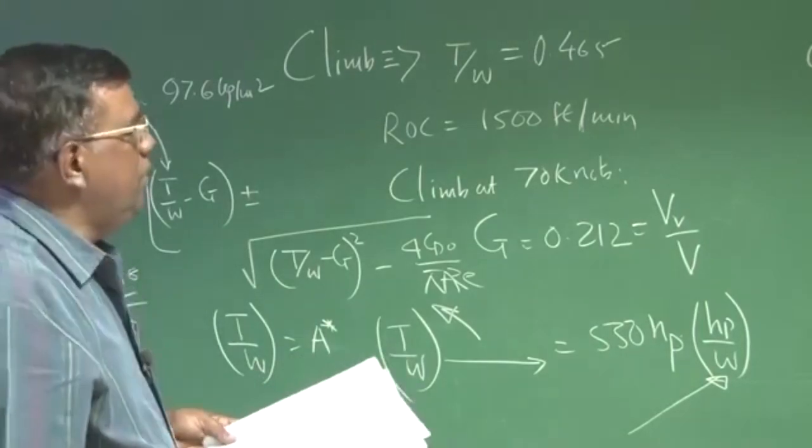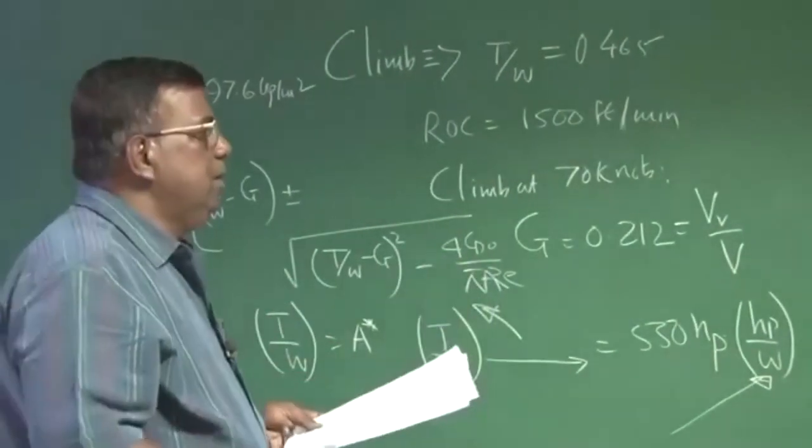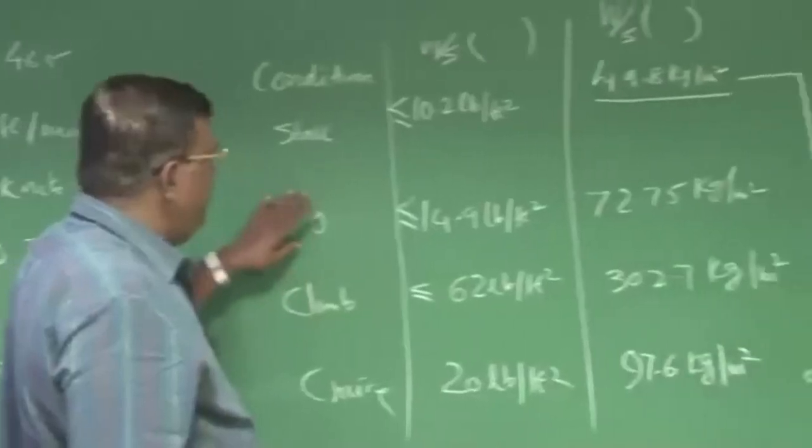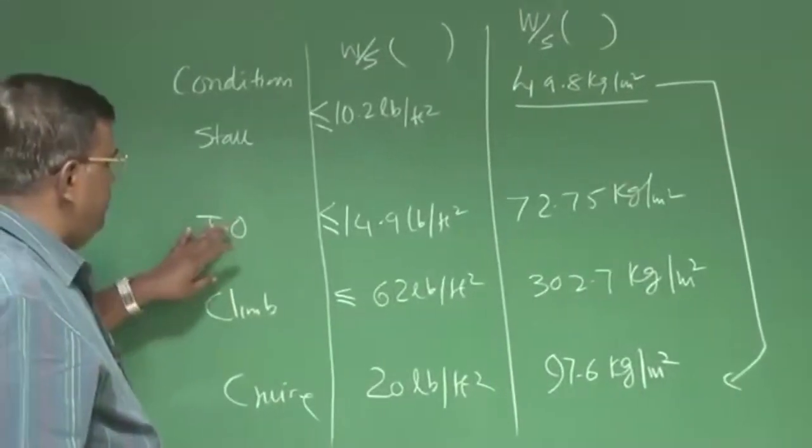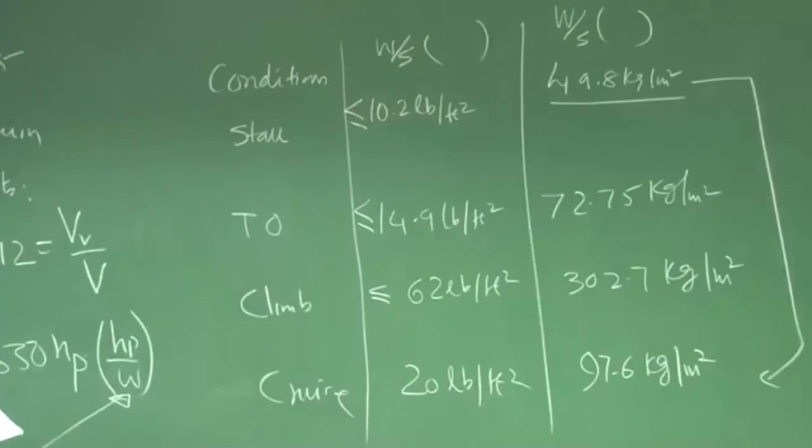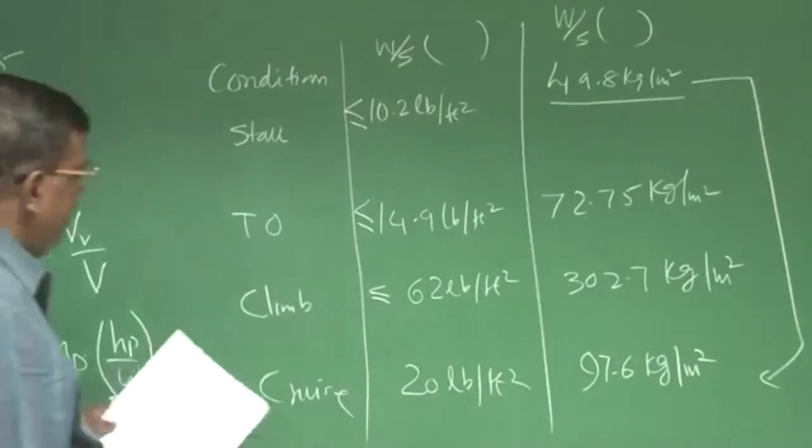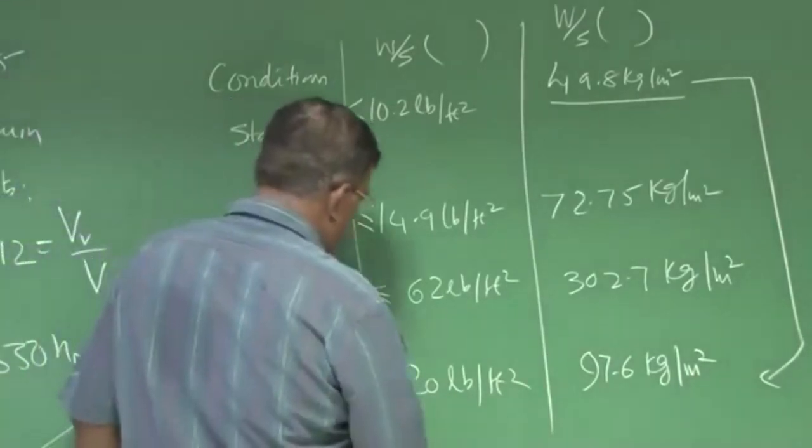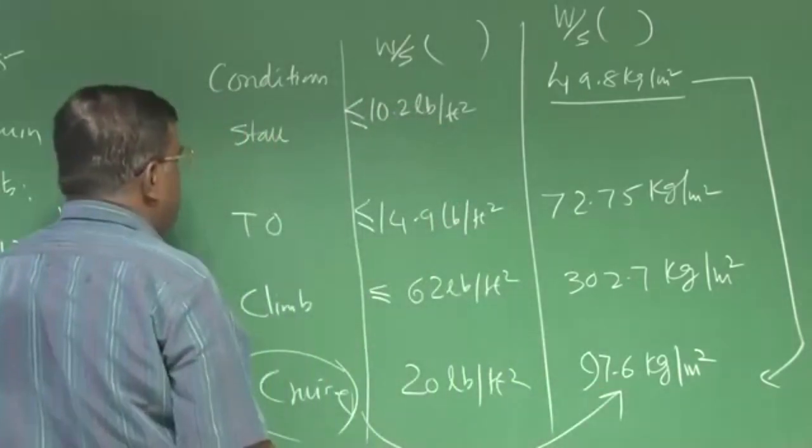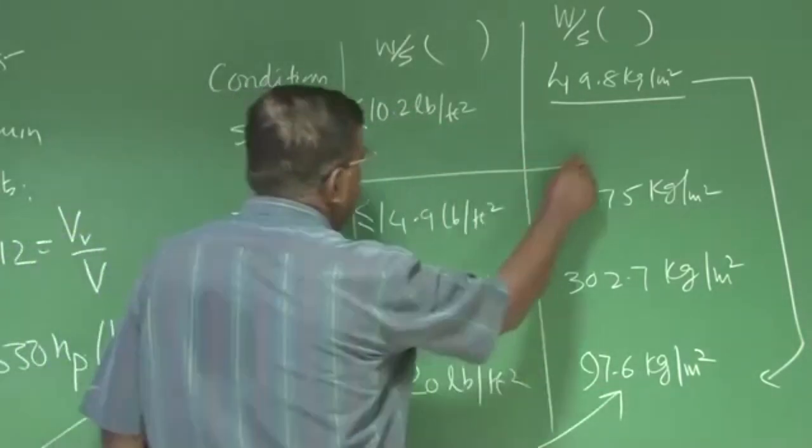And you will see when we actually solve an example, this thing will become crystal clear. Similar thing you will find with takeoff distance. If you see, if I take the cruise W by S, which is around 97 kg per meter square, and for takeoff distance, it is around 72.75 kg per meter square.